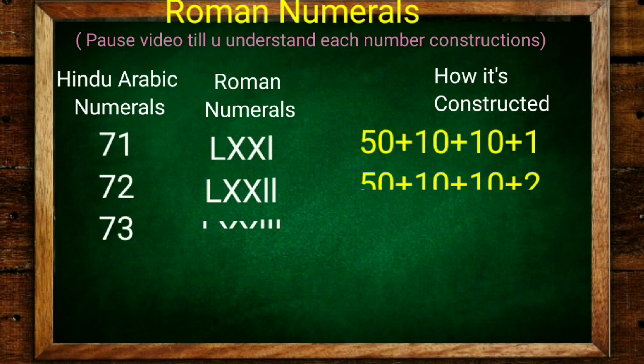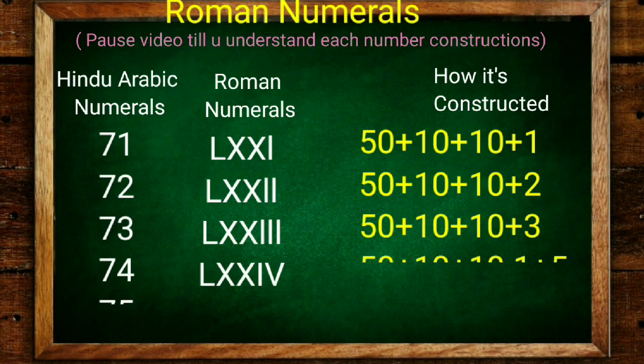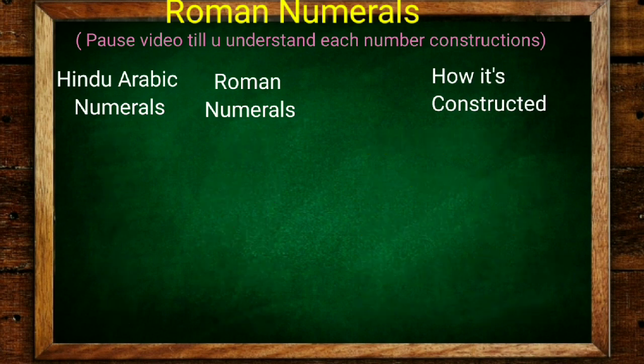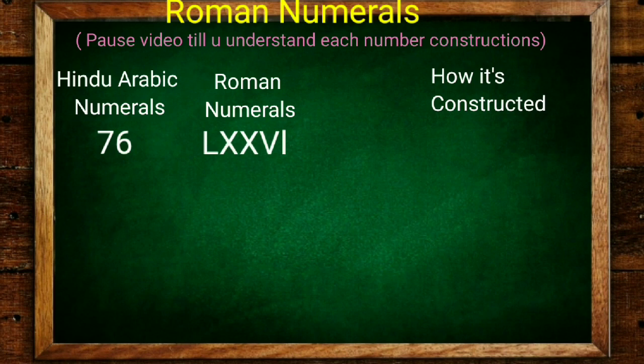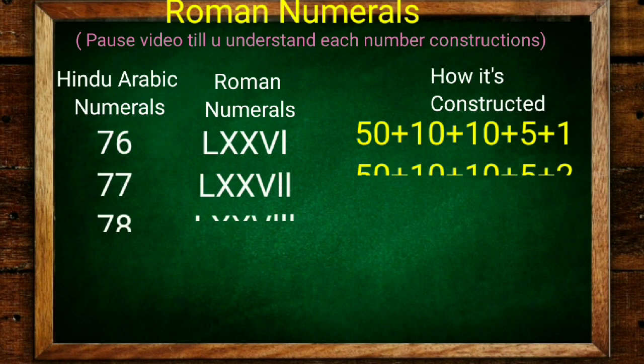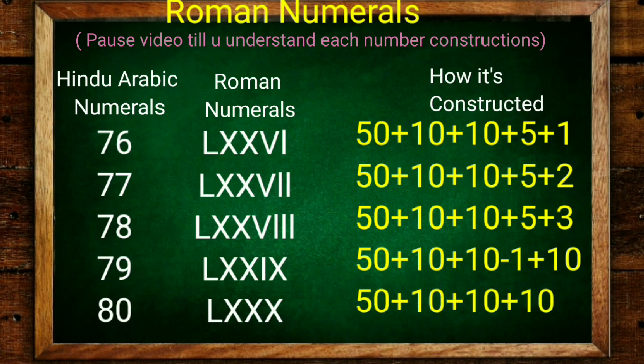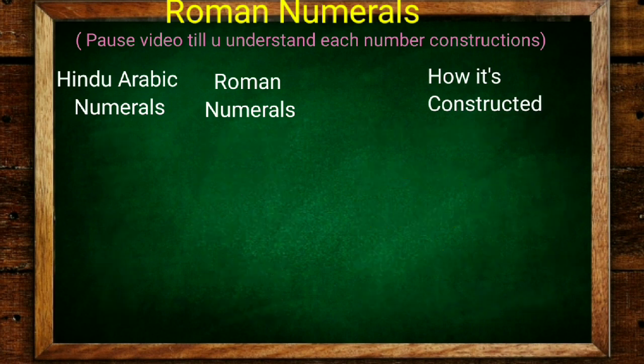71 is 50 plus 10 plus 10, 70 plus 1. 72 is 70 plus 2, 73 is 70 plus 3. 74 is 70 minus 1 is 69 plus 5, and 75 is 70 plus 5. Carefully learn each number so it will be very easy for you in the future. 76, 77, 78. 79 is 70 minus 1 is 69 plus 10, and 80 is 50 plus 10 plus 10 plus 10.